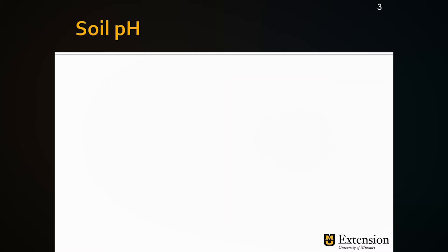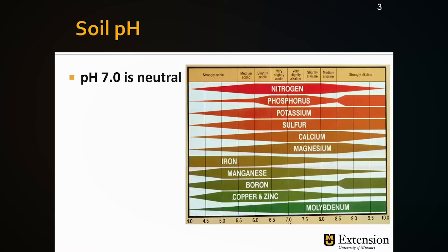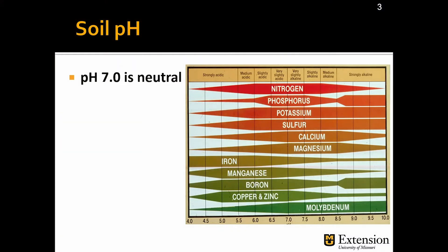Let's begin talking about soil pH. Soil pH is represented by a scale that goes from 1 to 14, in which a pH of 7 is said to be neutral. Any values below 7 are considered acidic and any values above 7 are considered basic or alkaline.